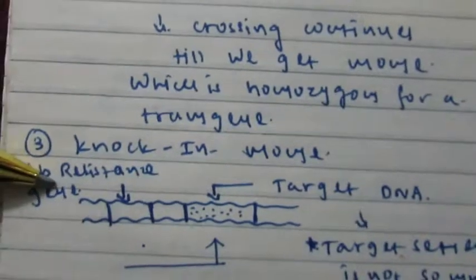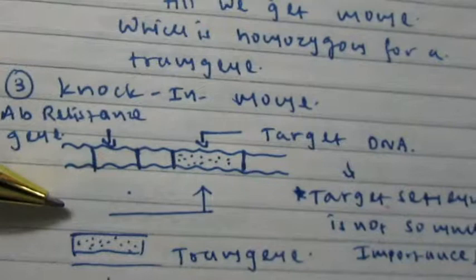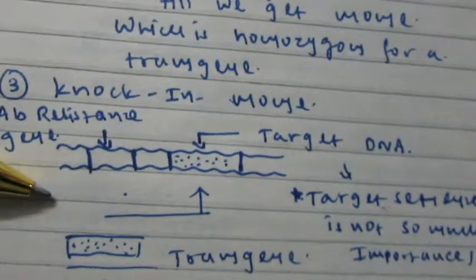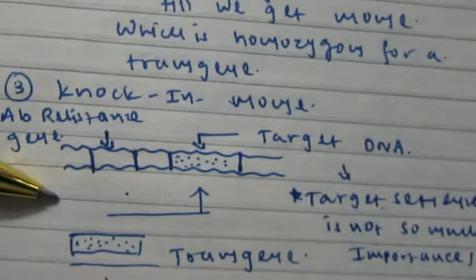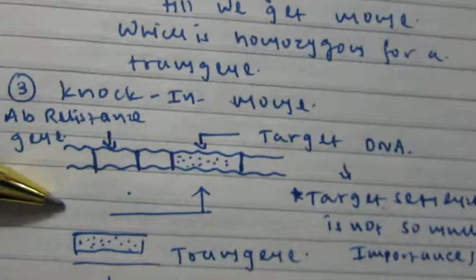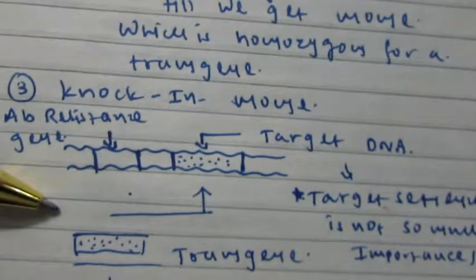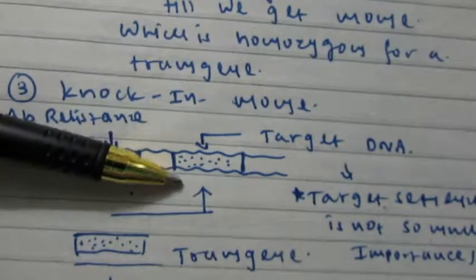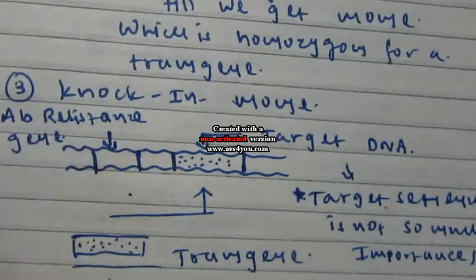The third one is knockin mouse. In knockin mouse, the target DNA may contain an antibiotic resistance gene, which slightly disrupts the target DNA. The sequence of target DNA is selected in such a way that if the antibiotic resistance gene is applied to this region, the expression of the main DNA molecule is not greatly disrupted.